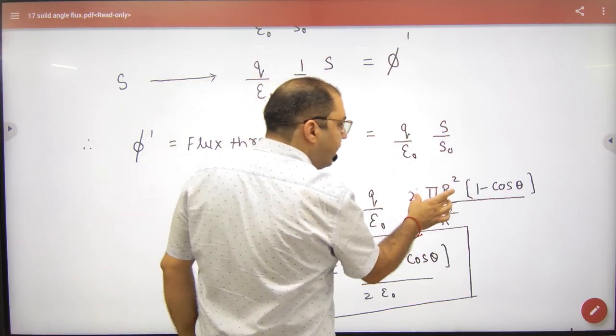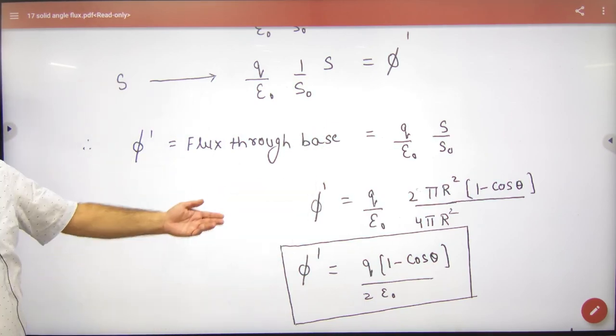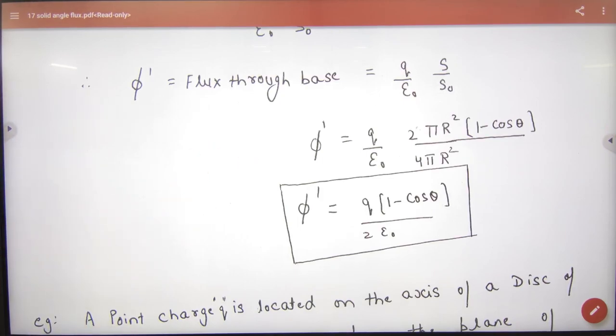And S = 2πr²(1 - cosθ). So this gives us the flux value. Note this formula in your register: φ = (Q/ε₀) × (1 - cosθ)/2.